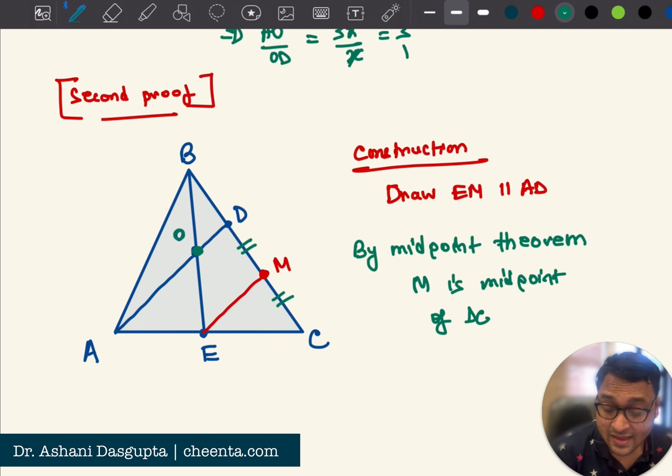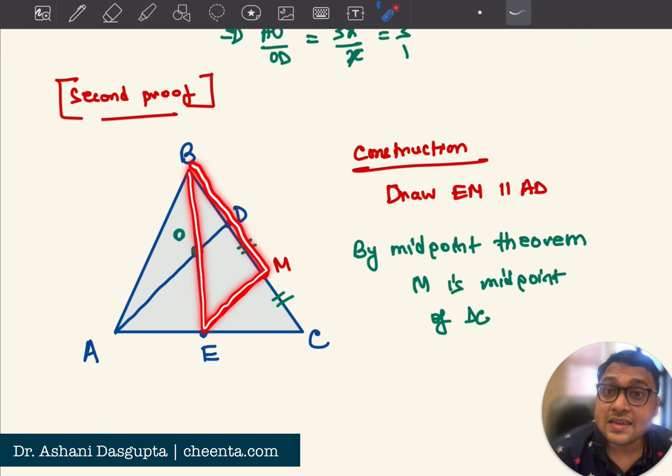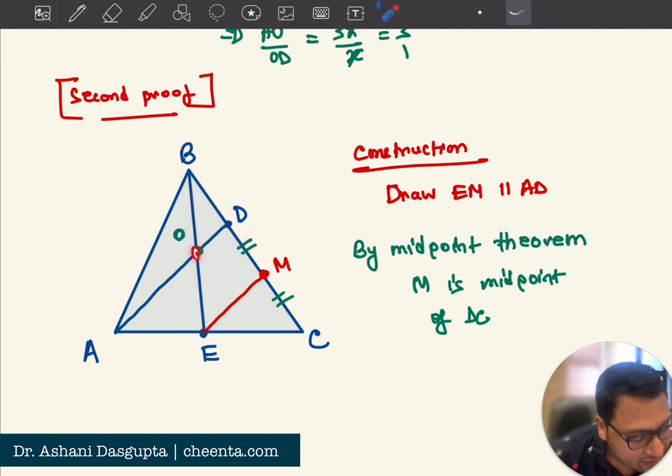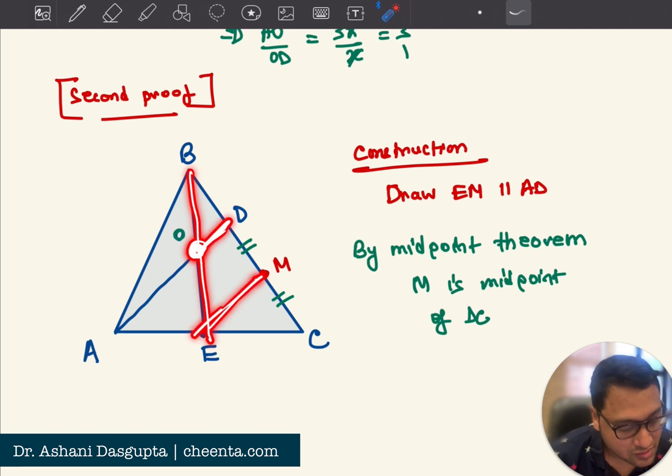Right. Now let's use the triangle BEM. BEM. Let's use the triangle BEM. Here O is the midpoint of BE. O is the midpoint of BE. And OD is parallel to EM. So again, by midpoint theorem, D is the midpoint of BM.